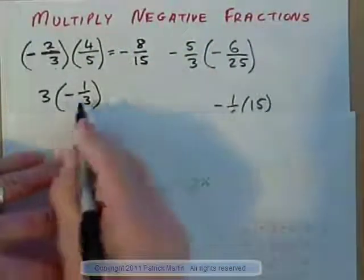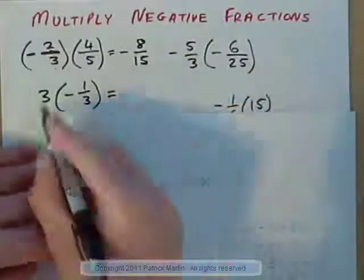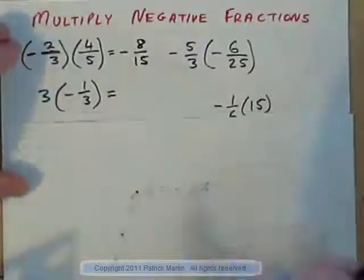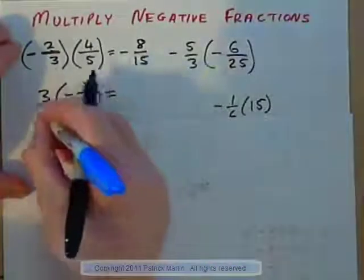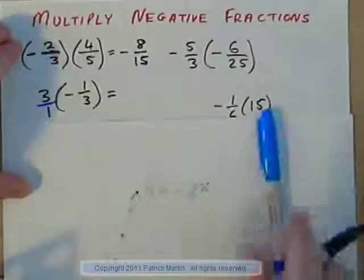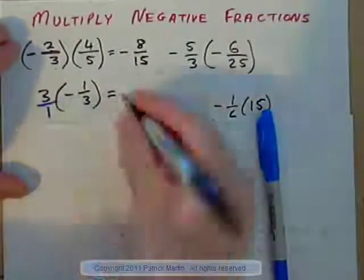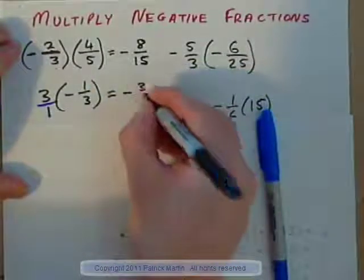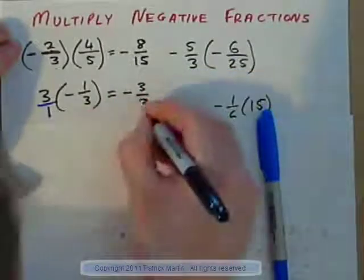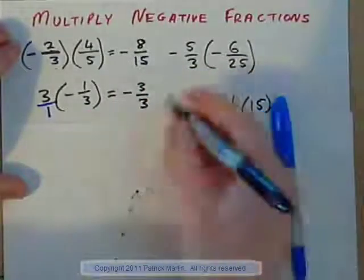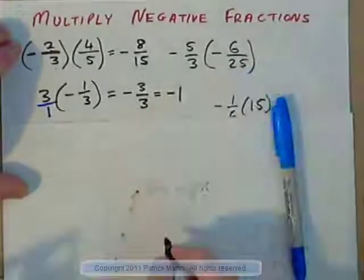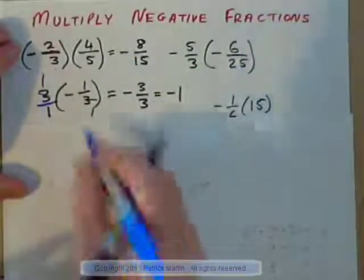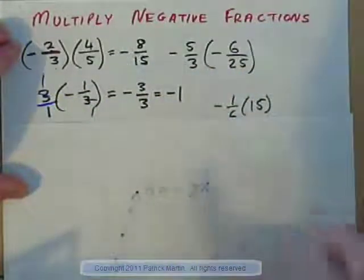How about this: 3 times negative 1/3? That's a whole number times a fraction. This becomes easier when we turn the whole number into a fraction too, so turn 3 into 3/1. Do the sign first: positive times negative is negative. 3 times 1 is 3, over 1 times 3 is 3, and 3/3 is 1, so that's negative 1. Or we could cross-cancel: 3 into 3 goes once, and we get negative 1/1, which is negative 1.